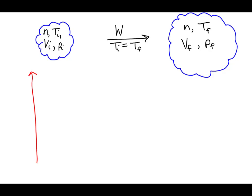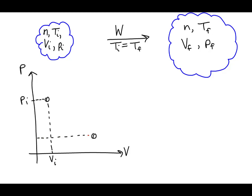A PV diagram is a useful tool that helps illuminate both qualitative and quantitative aspects of various thermodynamic processes. Here we have the initial state of the gas represented on the PV diagram. Since the gas undergoes an isothermal expansion, the final pressure will be less than the initial pressure, and the final volume will be greater than the initial volume, because these two states lie on the same isotherm.